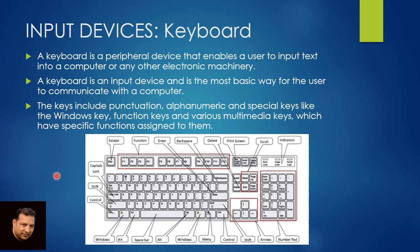Now we have input devices. The first is keyboard. A keyboard is a peripheral device that enables the user to input text to a computer or any other electronic machine. It is the most basic way for the user to communicate with the computer. There are various types of keys as you can see.